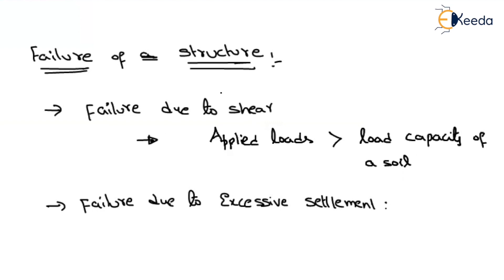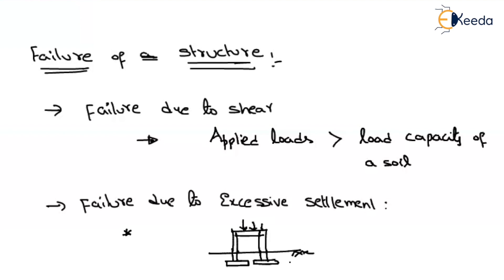The next failure is failure due to excessive settlement. Let us say you have constructed a structure with footings at the ground surface. After the application of load, imagine one support has moved one centimeter, two centimeters — the building is moving in the downward direction. Even though your structure is safe, because of the increase in settlement, we may have a fear that the structure is going to collapse. So the load capacity should be within the limit, and also the settlement should be within the limit. Only then will we consider a structure as safe.